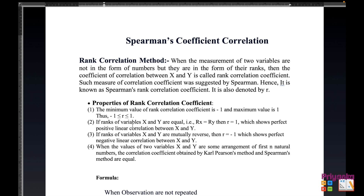Second, if the rank of variable x and y are equal, that is rx equals ry, then r will be 1, which shows a perfect positive linear correlation between x and y. Third, if the ranks of variable x and y are mutually reverse, then r equals minus 1, which shows perfect negative linear correlation. When values of x and y are some arrangement of natural numbers, the correlation coefficient by Karl Pearson method and Spearman method are equal.